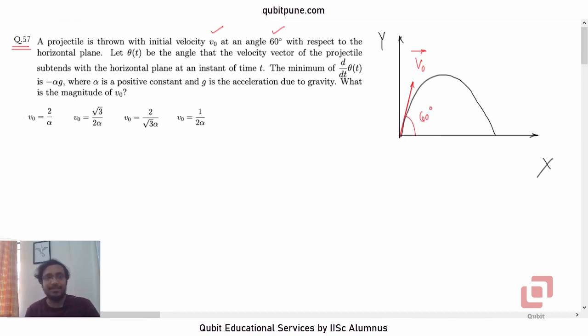So, we can say that theta when t is 0, because theta is the angle made by the velocity with the horizontal, theta t equal to 0 will be 60 degrees.